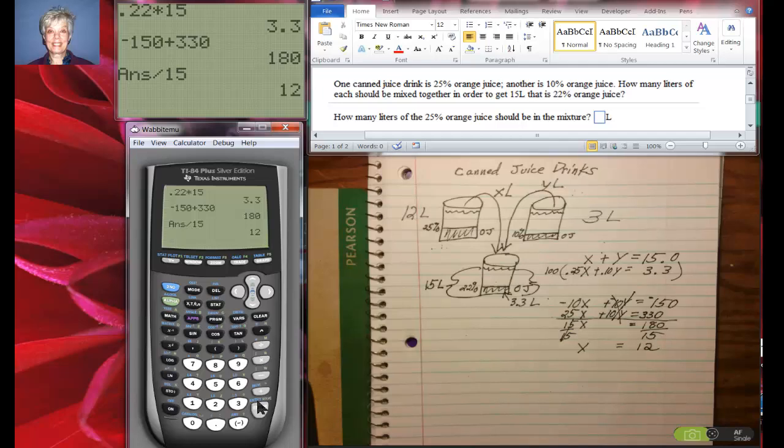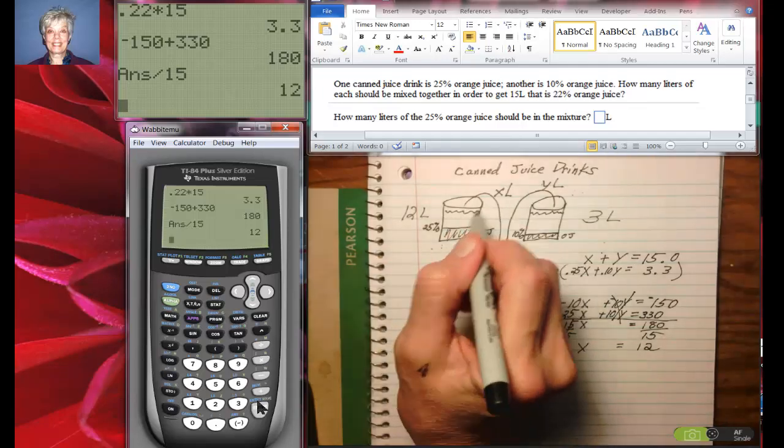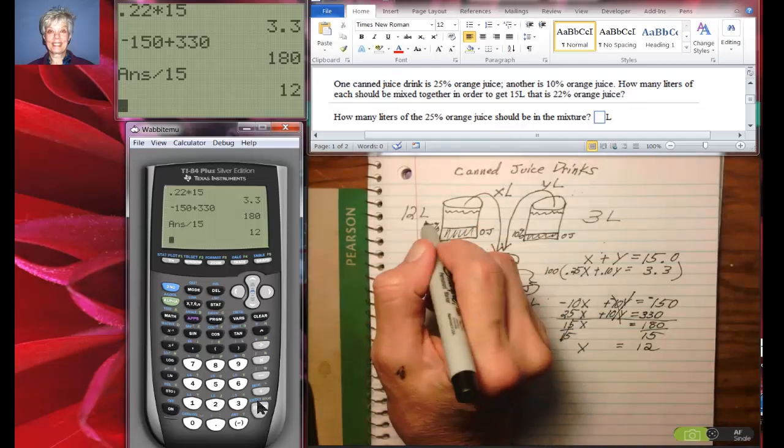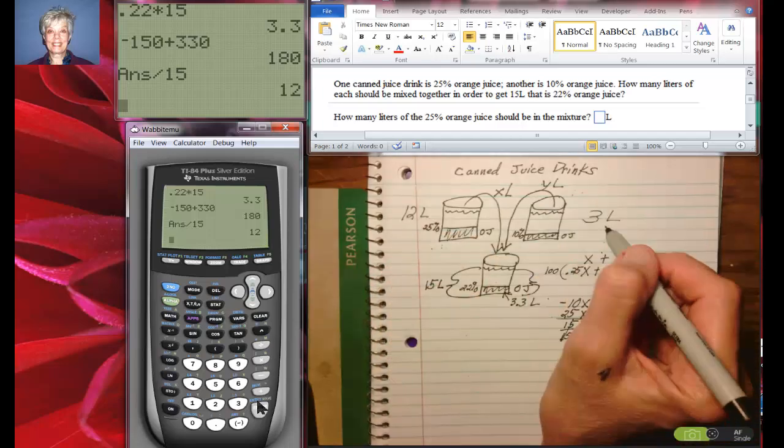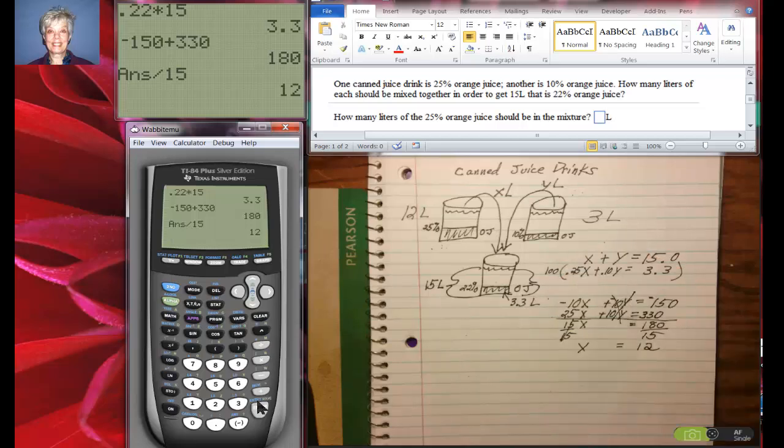So now we have our answers. We're going to use 12 liters of the 25% solution and 3 liters of the 10% solution. Let's see if that's right.